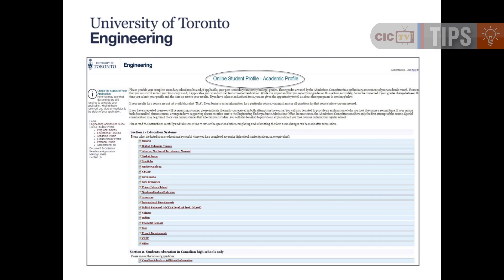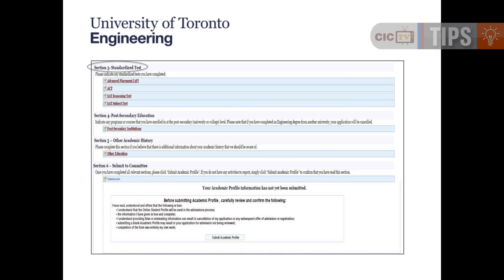The next component is your academic profile, which consists of self-recording your grades for grade 11 and 12 — specifically the prerequisite courses we require. You'll follow the prompts for your school and fill in the relevant fields. There will also be a component for uploading any standardized tests you've taken, such as AP courses or the SAT, so you'll have a chance to upload those as well.